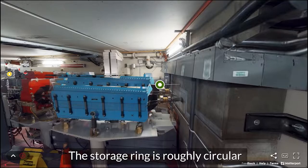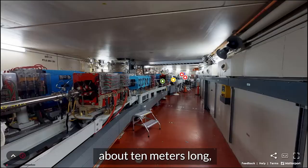The storage ring is roughly circular with 12 arc-shaped sections about 10 meters long, joined by 12 straight sections about 6 meters long.